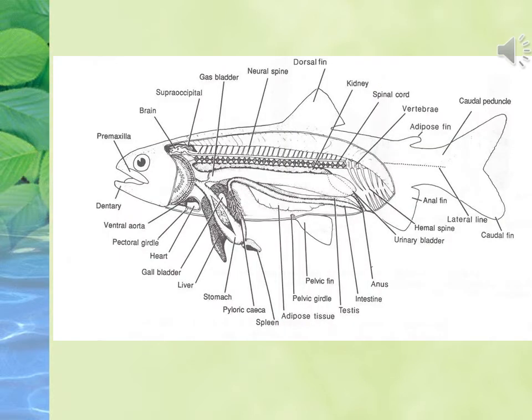This second picture provides another overview of the fish. You can see the dorsal fin, spinal cord, caudal peduncle, adipose fin, anal fin, lateral line, urinary bladder, adipose tissues, spleen, heart, pectoral girdle, ventral aorta, dentary, premaxilla, etc. These two pictures are compact pictures having basic information about the structure of the fish.